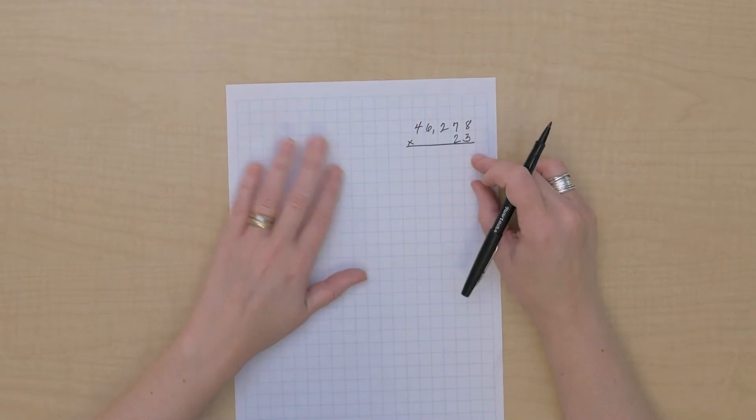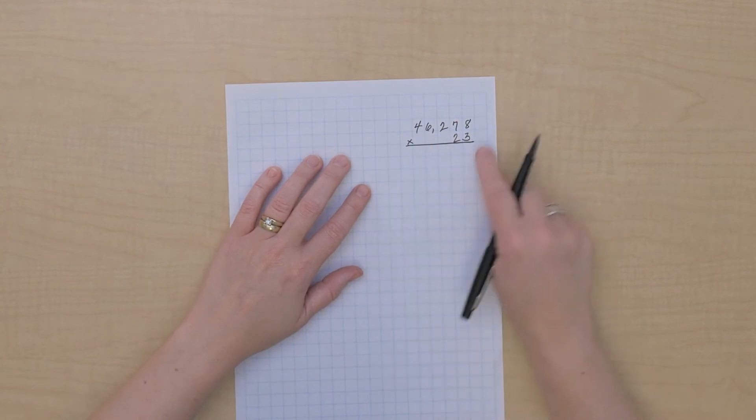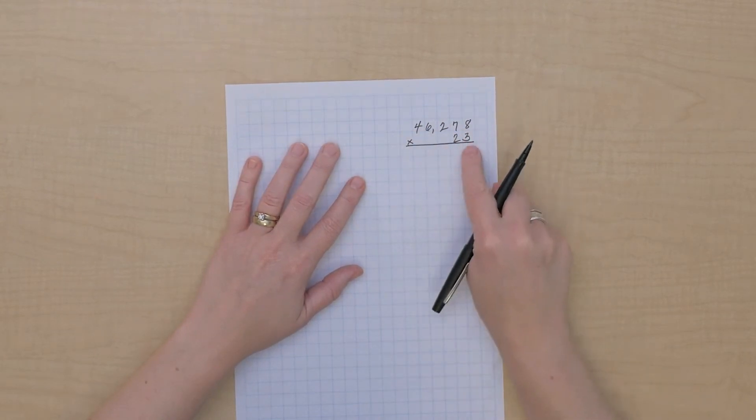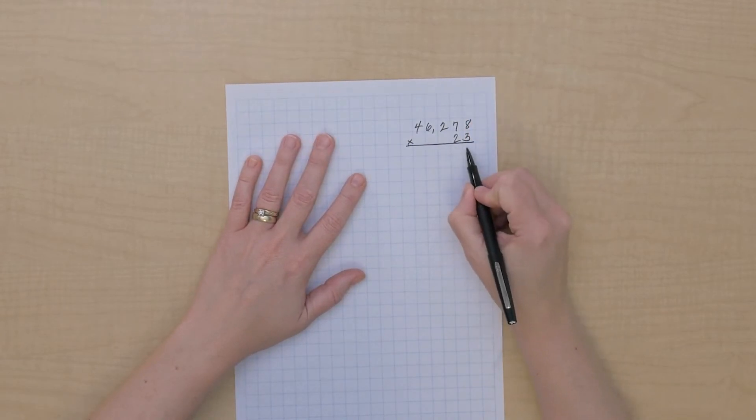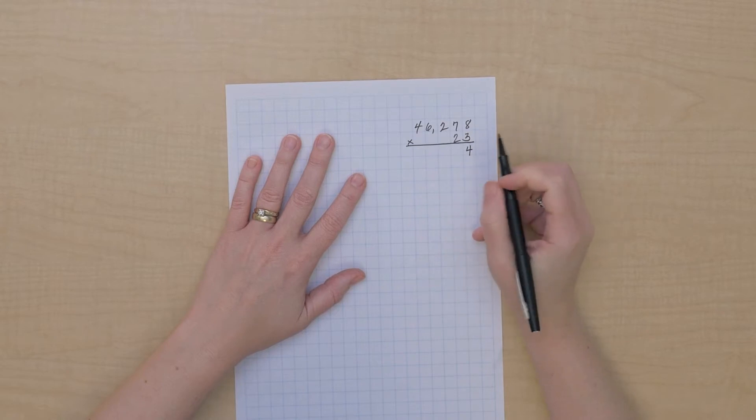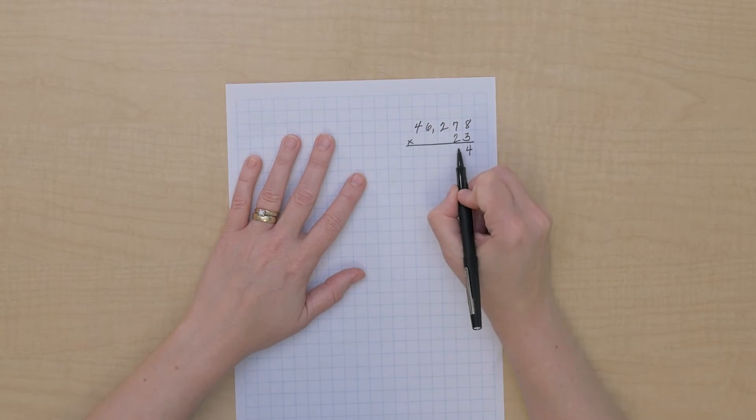In order to do this multiplication, the first thing I would do is pay attention to our units multiplier and multiply everything times that. So let's start that way. We have 8 times 3 is 24. I'm going to put my 4 here, but remember my 2 because I know I'm going to have more tens to work with. 7 tens times 3 is 21 plus the 2 I'm remembering. So that's 23 tens.